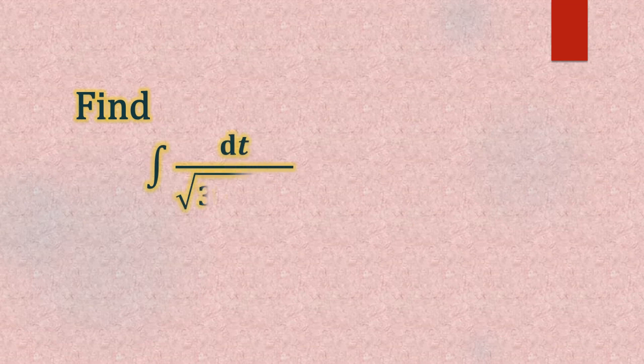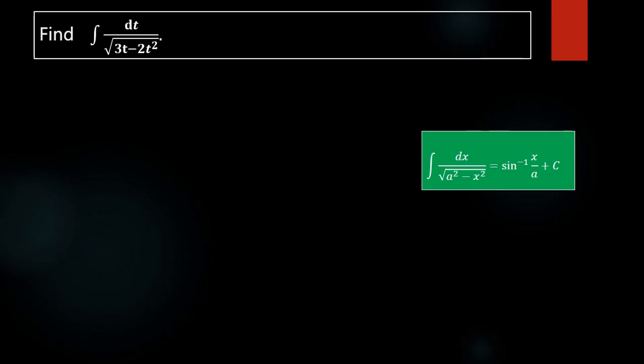Integrals. We have to find the value of the given integral, that is the integral of dt divided by the square root of 3t minus 2t squared.